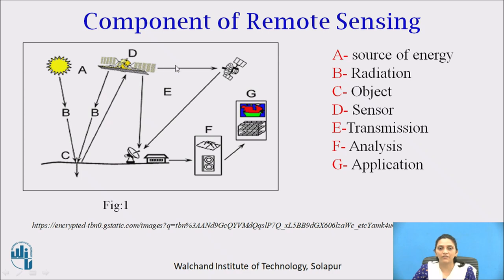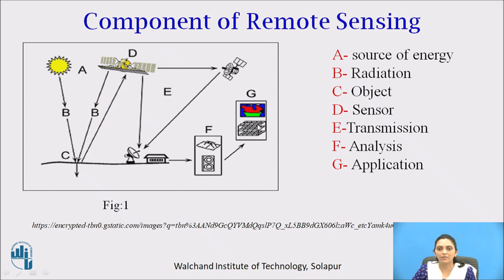That image is then sent to another source for the removal of any errors. If there is no error, it is directly sent to the ground source. All the collected data is analyzed, and after analysis, the available information is used in various fields — that is the application.